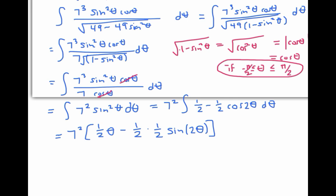And the integral of cosine of two theta is one half sine of two theta. So let me add my constant of integration. And I'm almost done, almost but not quite.